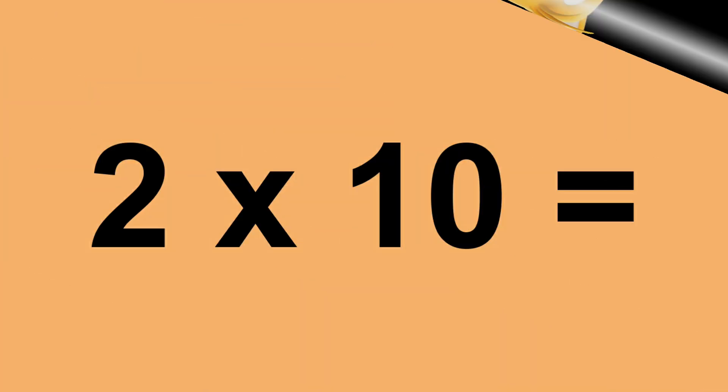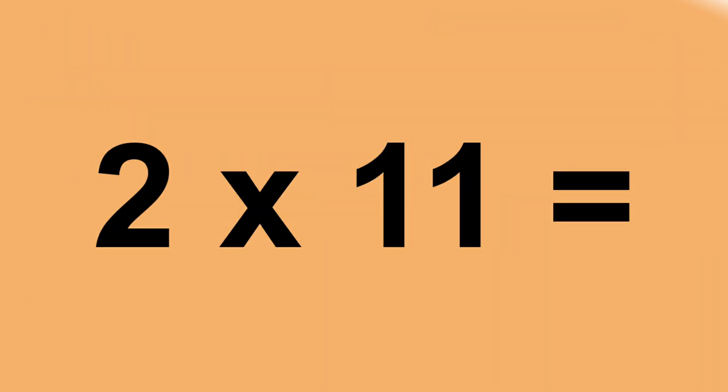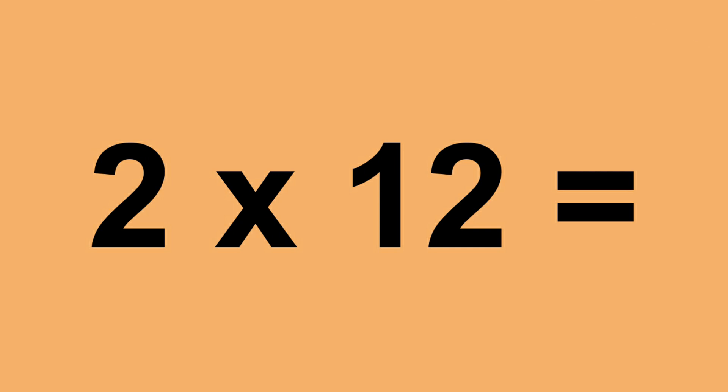Two times ten equals twenty. Two times eleven equals twenty-two. Two times twelve equals twenty-four.